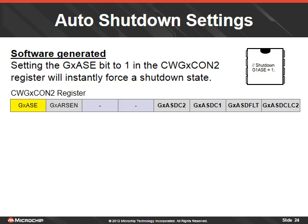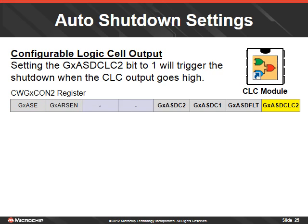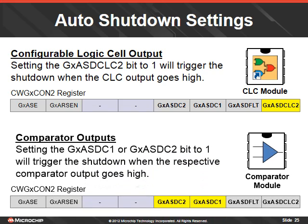To enable an external input pin controlled shutdown, the G-ASD-FLT bit is set to 1. When the CWG-FLT IO pin is pulled low, it will trigger the shutdown. The configurable logic cell can control the shutdown by setting the G-ASD-CLC bit to 1. This will trigger a shutdown when the CLC module output goes high. Comparators can also be used to control the shutdown, with a bit setting for each comparator. Setting the G-ASD-C1 or C2 bit to 1 will trigger a shutdown when the comparator output goes high.